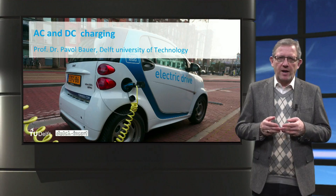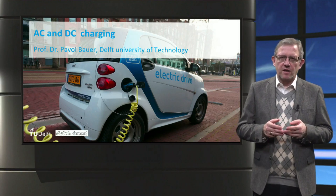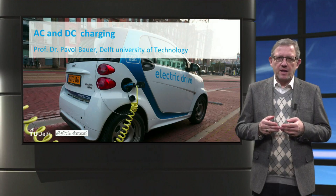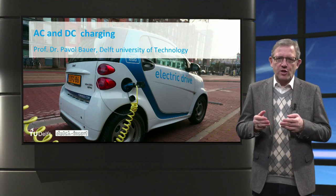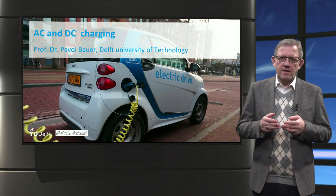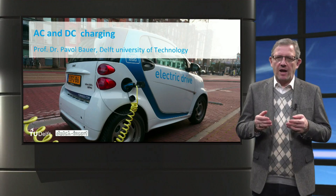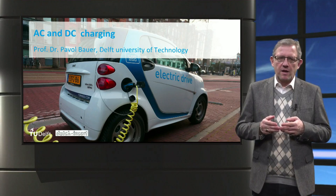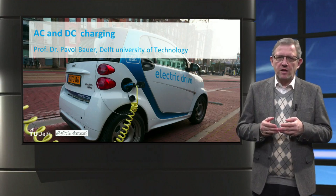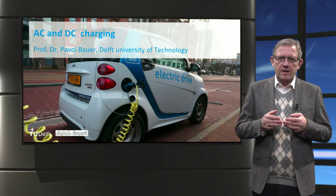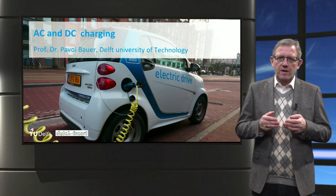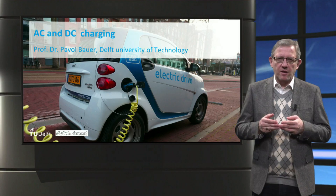To wrap up, electric vehicles can be charged by AC or DC charging. The main difference is that in DC charging, the AC to DC power converter is placed outside the vehicle in an off-board charger, and hence the charging power can be as high as 350 kW. In case of AC charging, the on-board charger is used, which is usually restricted to less than 22 kW. Finally, since car manufacturers have not agreed on a single connector, various connectors are used for AC and DC charging globally. Thank you.